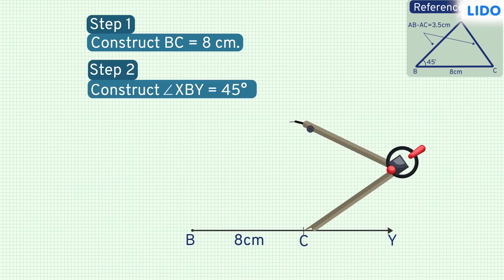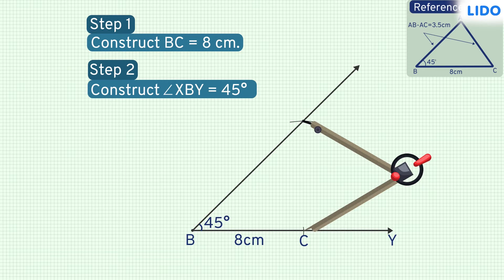Next, we construct the base angle which is 45 degrees. We can construct this by bisecting a 90 degree angle. Let's call the angle XBY.